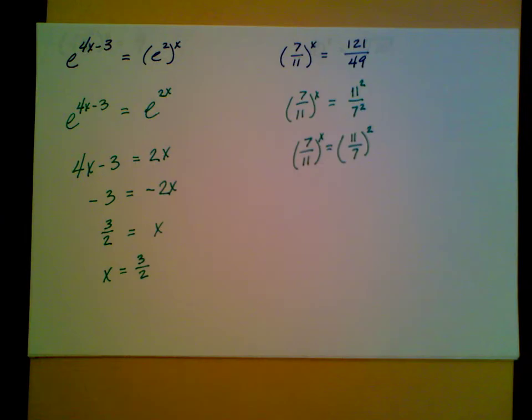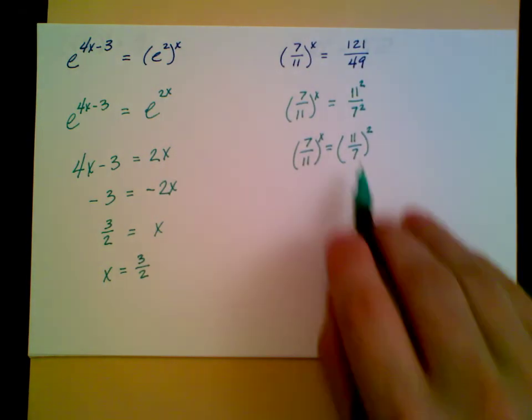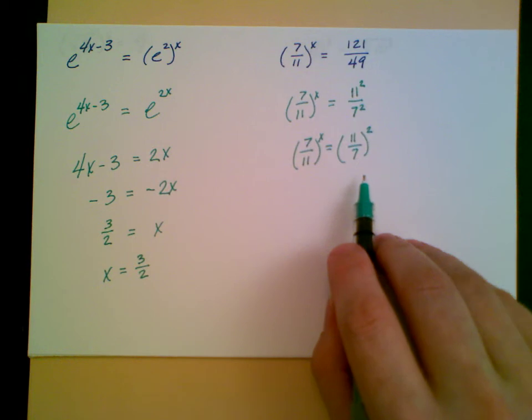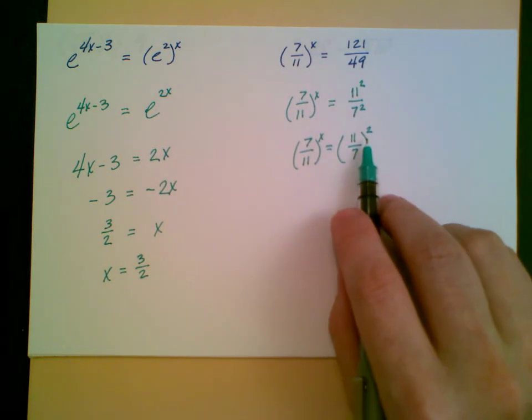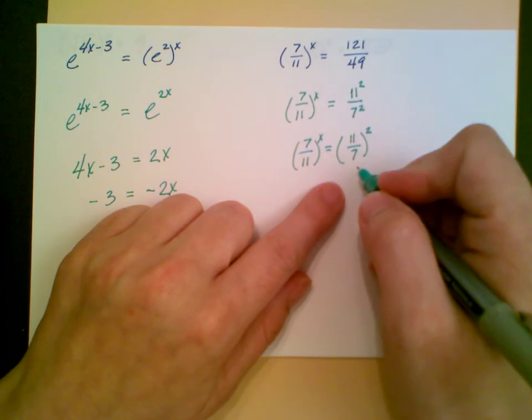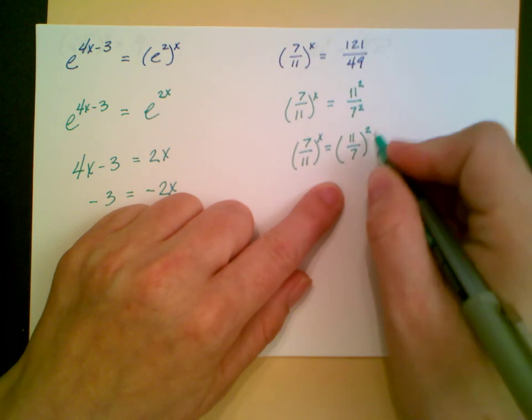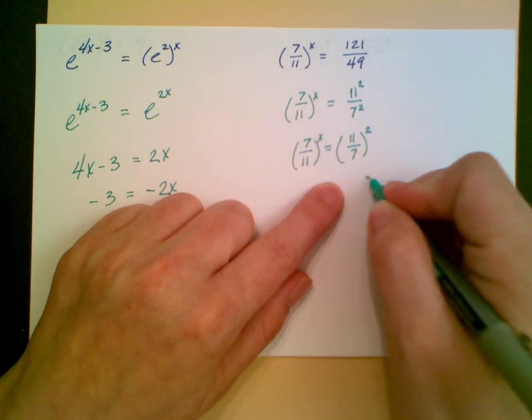But notice I still don't have the exact same fraction. They're very closely related though. They are reciprocals of each other. Remember that a negative exponent tells me to take the reciprocal. So if I want to take the reciprocal of this right-hand side, I can change this 2 into a negative 2.